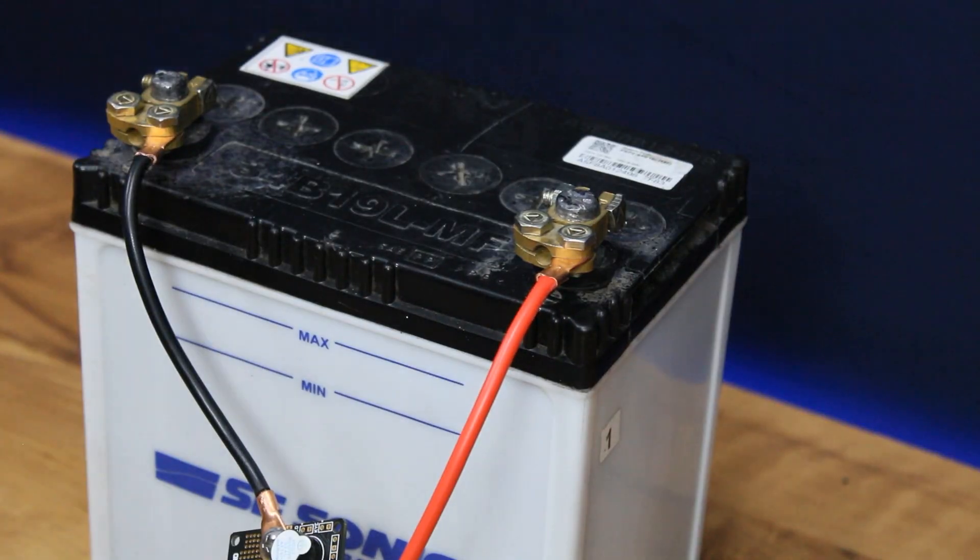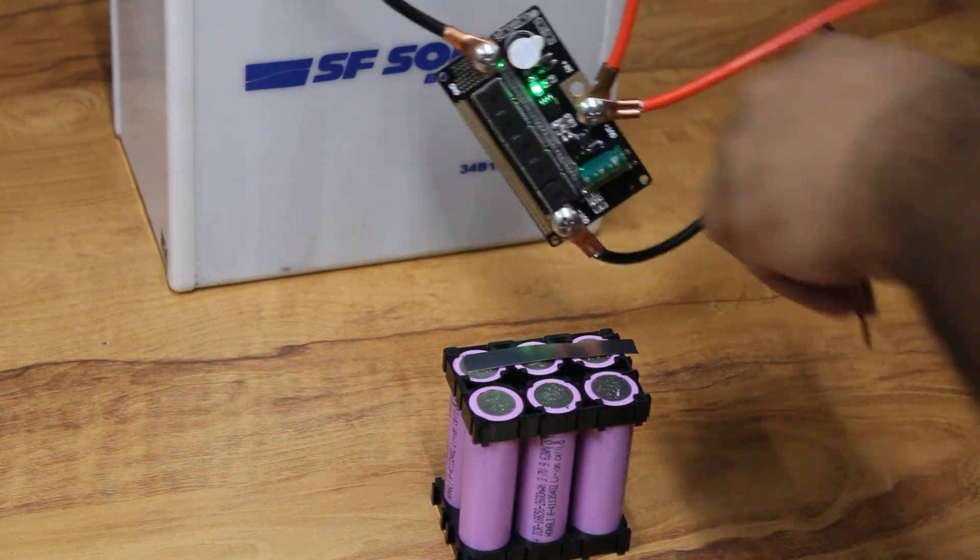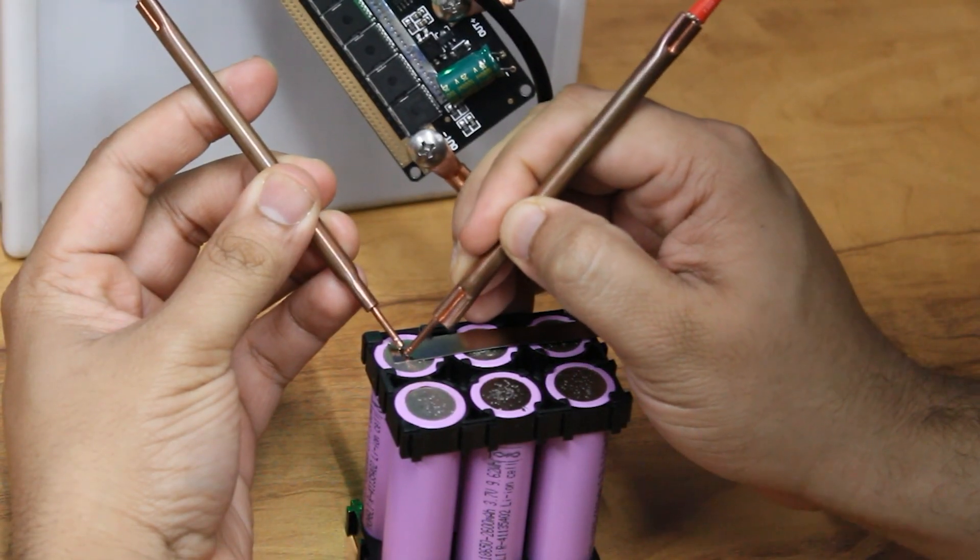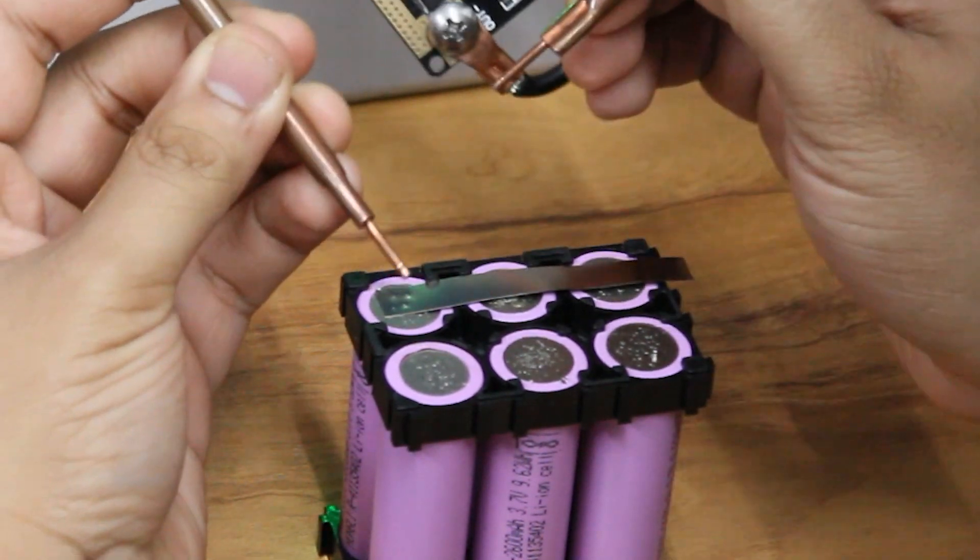To use this spot welder, connect the PCB to the battery, place the nickel strip on the cell, press and hold two copper probes along with the nickel strip on the battery, which is a bit difficult doing at the same time unless you have an extra hand.